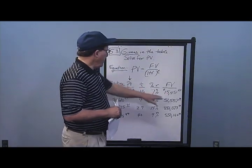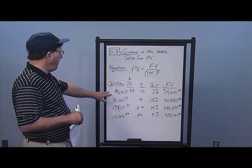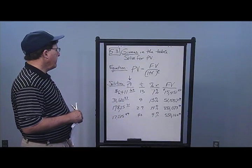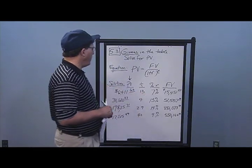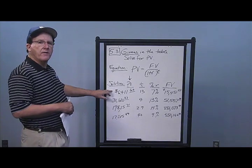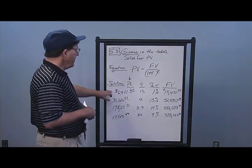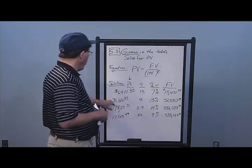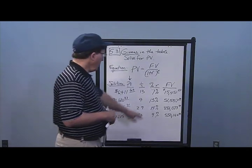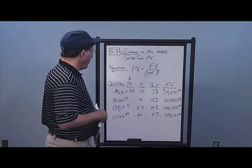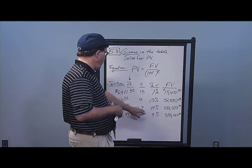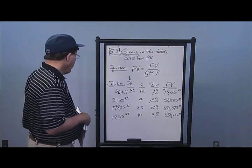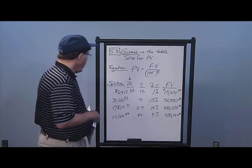We're given FV, time, and rate, and we solve for PV. In the first case, $15,451 divided by (1.07) to the 13th power gives PV of $6,411.62. Second, $51,557 divided by (1.13) to the 4th gives $31,620.87. Third, $886,073 divided by (1.14) to the 29th gives $19,825.71.